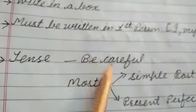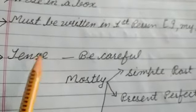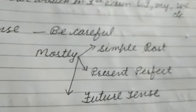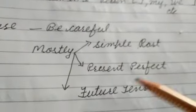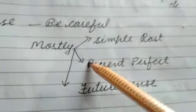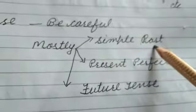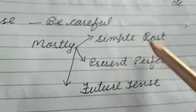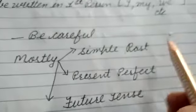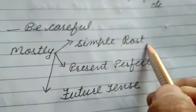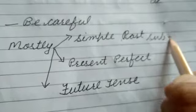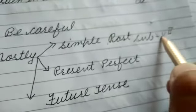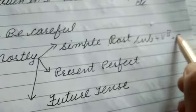Be careful regarding the use of tense. Mostly when you are writing a diary, you have to use simple past tense. You have to follow the structure: subject + V2 (verb second form) + object.